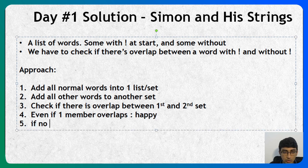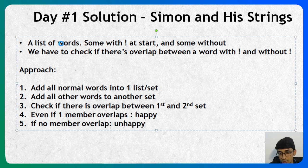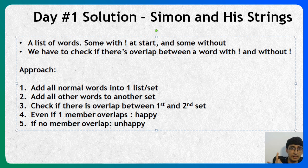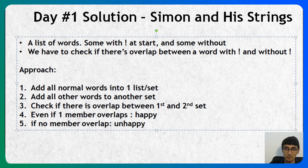If even one member overlaps, it's happy. If no member overlaps, it's unhappy. You could also use a list, but with a set, membership checking is much faster because the set hashes your string, giving you O(1) lookup. There are better approaches, but since many beginners participated in this challenge, I'm going with the simplest approach.